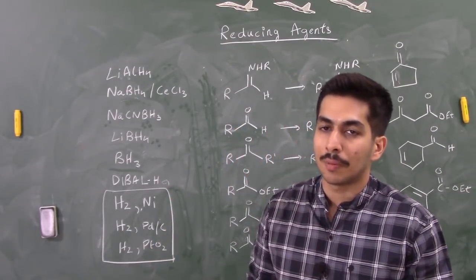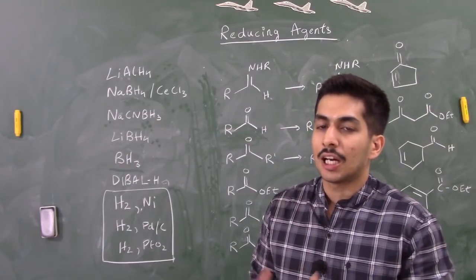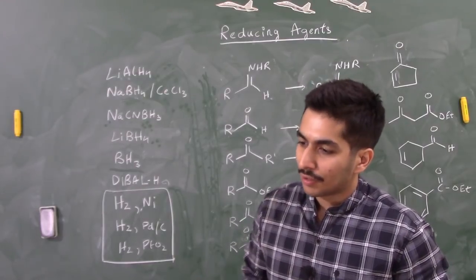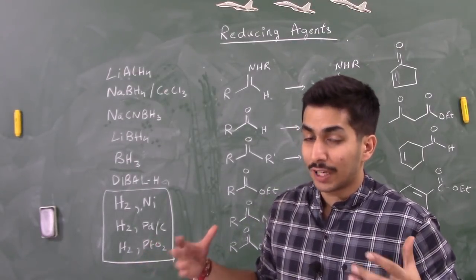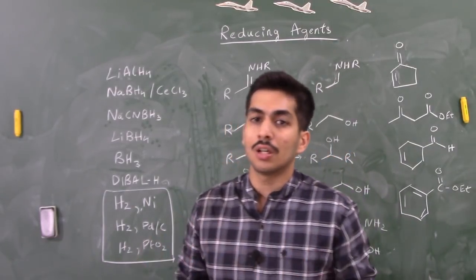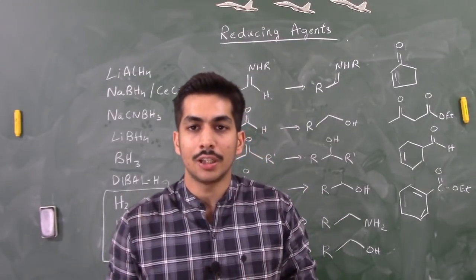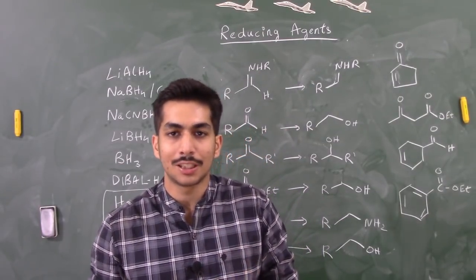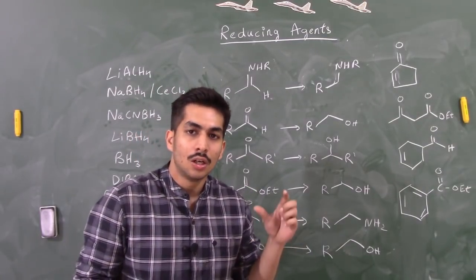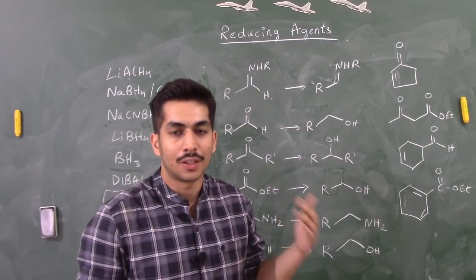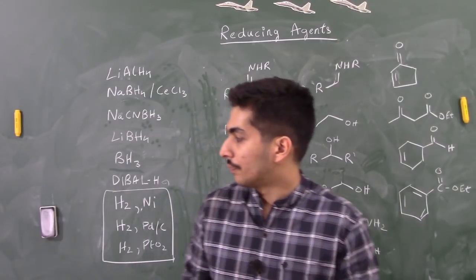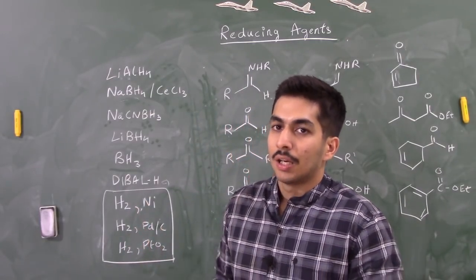Hydrogenating reagents can easily reduce double bonds — alkynes and alkenes — but are generally unable to reduce carbonyl groups (C=O bonds). Under extreme conditions like very high pressure or extended reaction times, they may reduce carbonyls, but normally they do not. They can also reduce aromatic ring systems like benzene/phenyl groups under specific conditions.